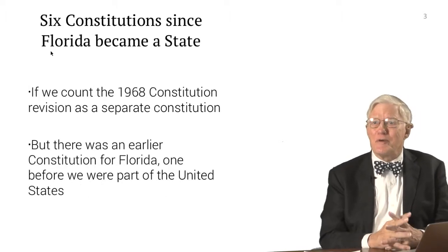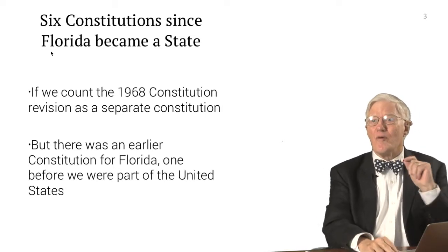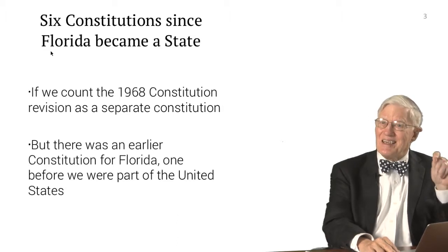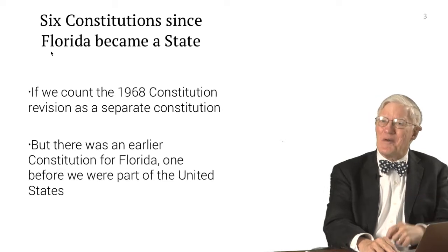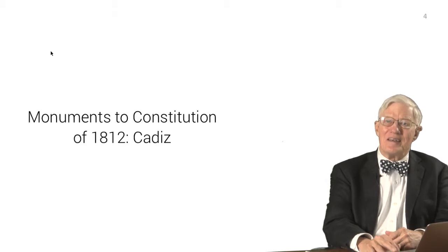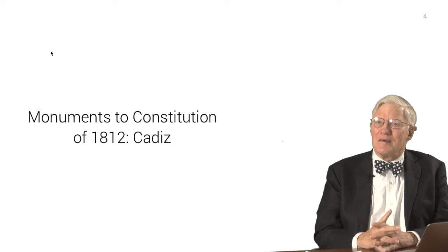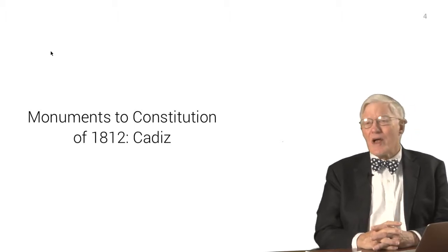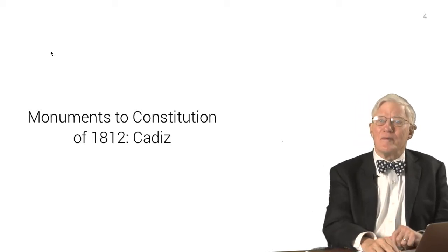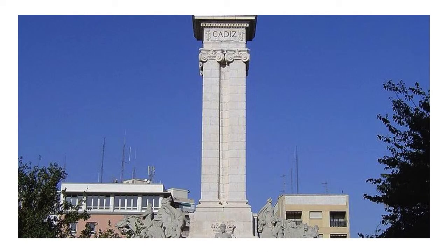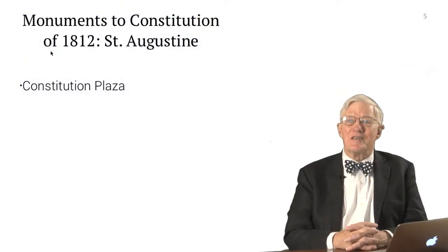We have these six constitutions, but we should point out that before Florida was part of the United States, Florida had a constitution — and this is not widely known. Very few lawyers understand the fact that we had a Constitution of 1812. Florida did not become a territory of the United States until 1819, but we had a constitution adopted in the city of Cadiz, Spain. If you go to Cadiz, you'll find a monument to this constitution.